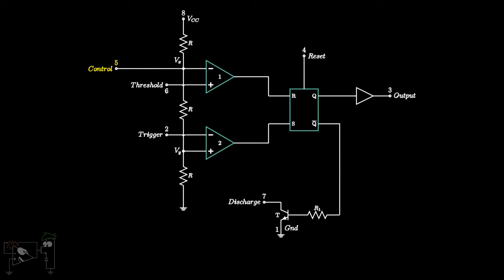Usually, the input at this node would be 2 by 3 VCC. However, we can override that and set a voltage of our choice by applying a voltage at the control pin. Using this, we can change our timing signals.